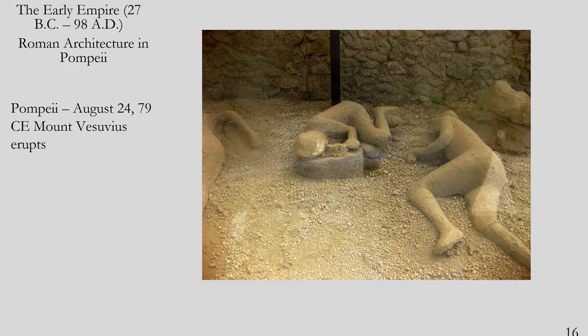Pompeii gives us an amazing view of Rome at the height of the Republican period that we otherwise would not be able to see. Cities generally erase, build on, or alter the past. It's rare to find buildings or structures that have not been altered over time. Pompeii is frozen. Even the bodies of thousands and thousands of people were preserved as a huge wall of ash fell upon the city. We have people, animals, and livestock all frozen in time.